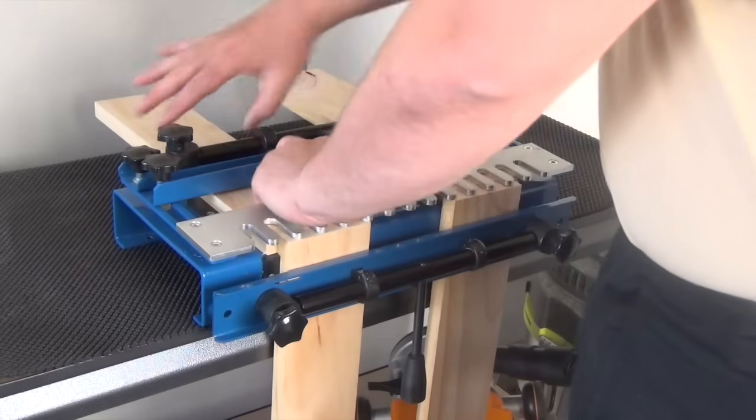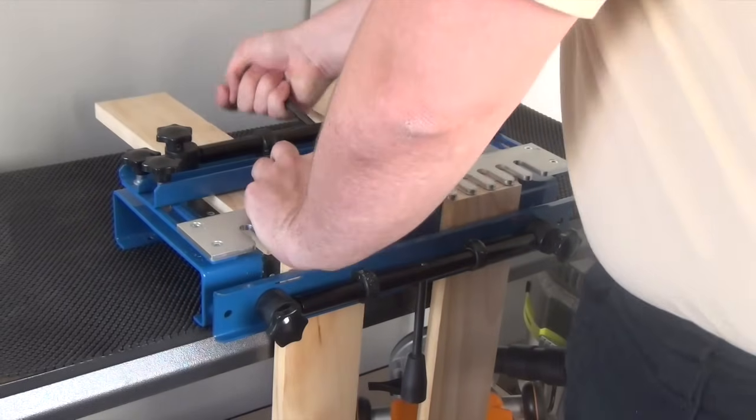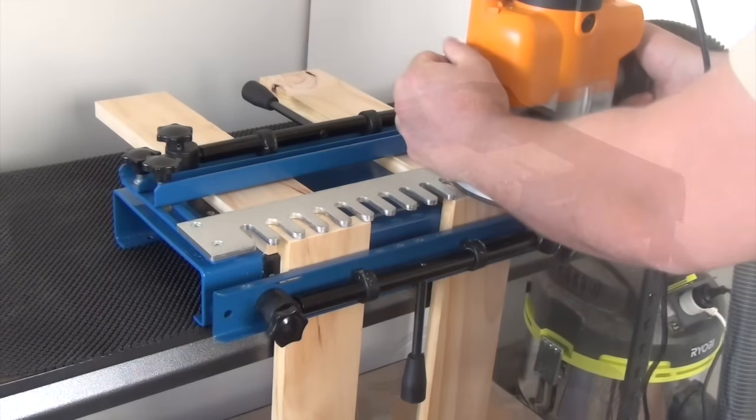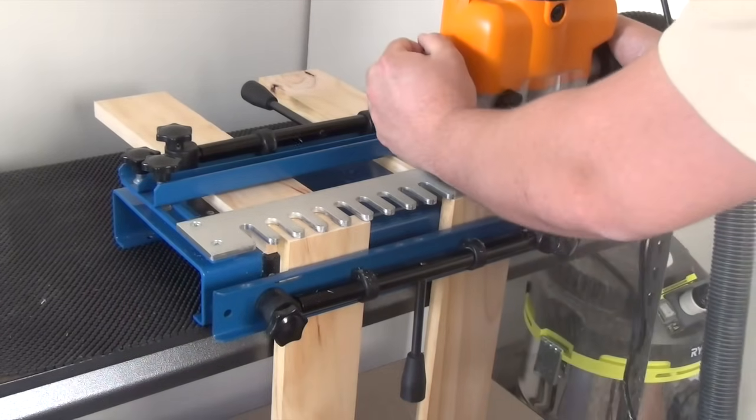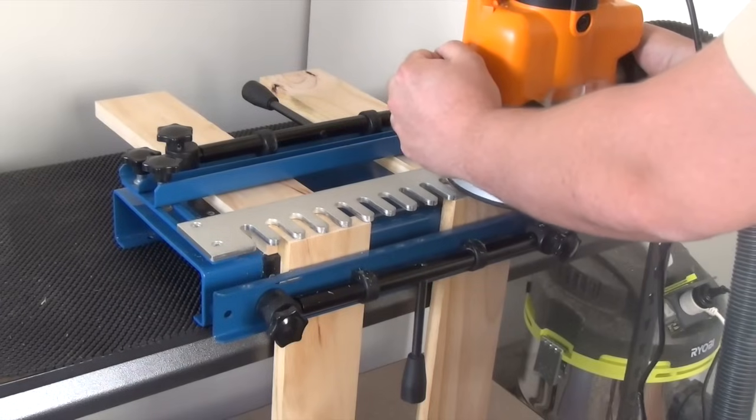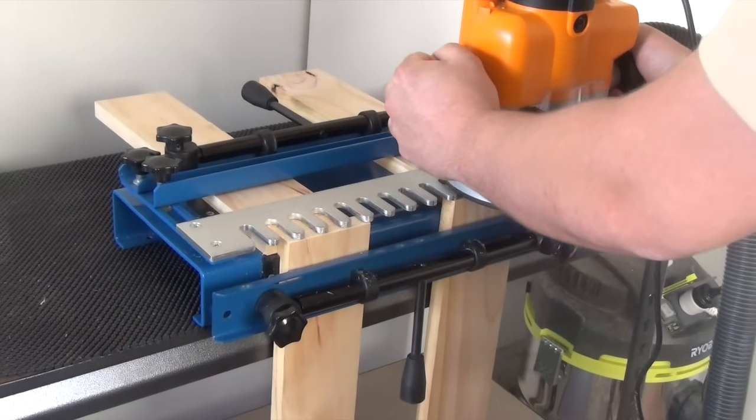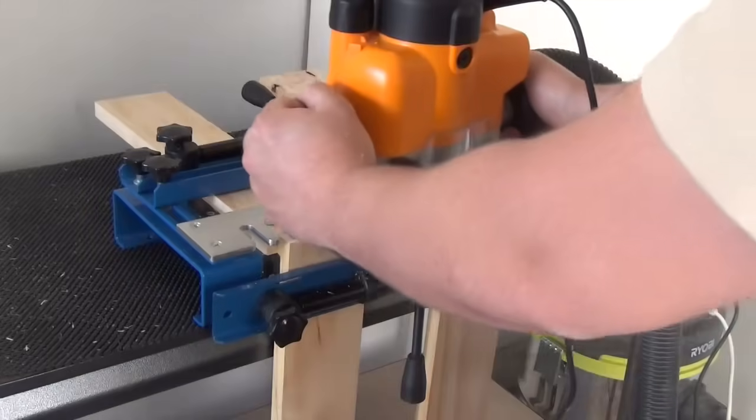If the workpieces are too wide, then remember to alternate the sides of the jig you are using on the workpieces so that the offset when assembled lines up correctly. Once you have all four workpieces loaded against the stops and the clamps correctly, you can cut the tails and pins on all four workpieces at the same time.